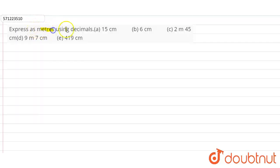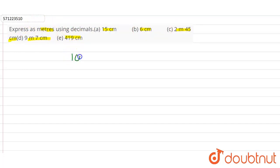In this question, we have to express as meters using the decimal: 15 centimeter, 6 centimeter, 2 meter 45 centimeter, 9 meter 7 centimeter, and 419 centimeter. We know that 1 centimeter is equal to 1 by 100 meter.